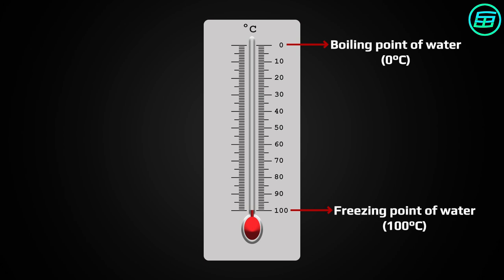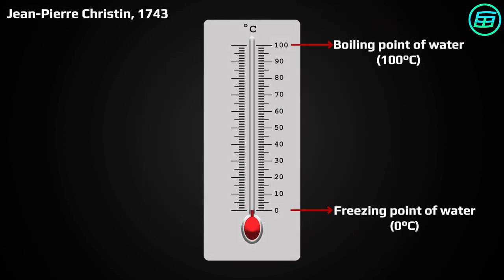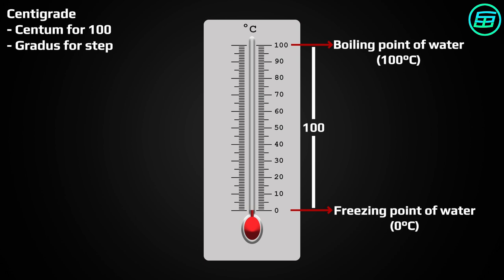In 1743, a reversal of this scale going from 0 to 100 was proposed by Jean-Pierre Christin. It was called centigrade, from the Latin centum for 100 and gradus for step. Now we know it as the Celsius scale.